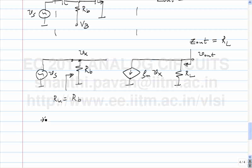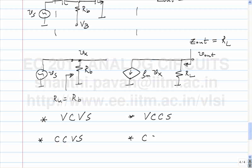In linear circuits — elements without memory — you are left with resistors and controlled sources. Let us try to realize an ideal voltage controlled voltage source, an ideal voltage controlled current source, an ideal current controlled voltage source, and an ideal current controlled current source using this basic building block, which is the common source amplifier.